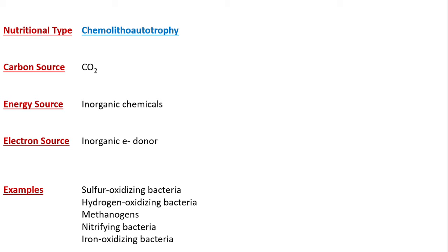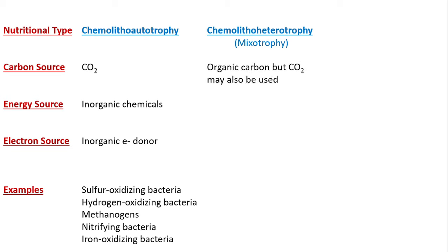Examples of chemo-litho-autotrophs include sulfur-oxidizing bacteria, hydrogen-oxidizing bacteria, methanogens, nitrifying bacteria, and iron-oxidizing bacteria. Most of these bacteria are involved in biogeochemical cycling — methanogens appear in the carbon cycle, and nitrifying bacteria like Nitrosomonas and Nitrobacter appear in the nitrogen cycle. The next type is chemo-litho-heterotrophs, also known as mixotrophs.